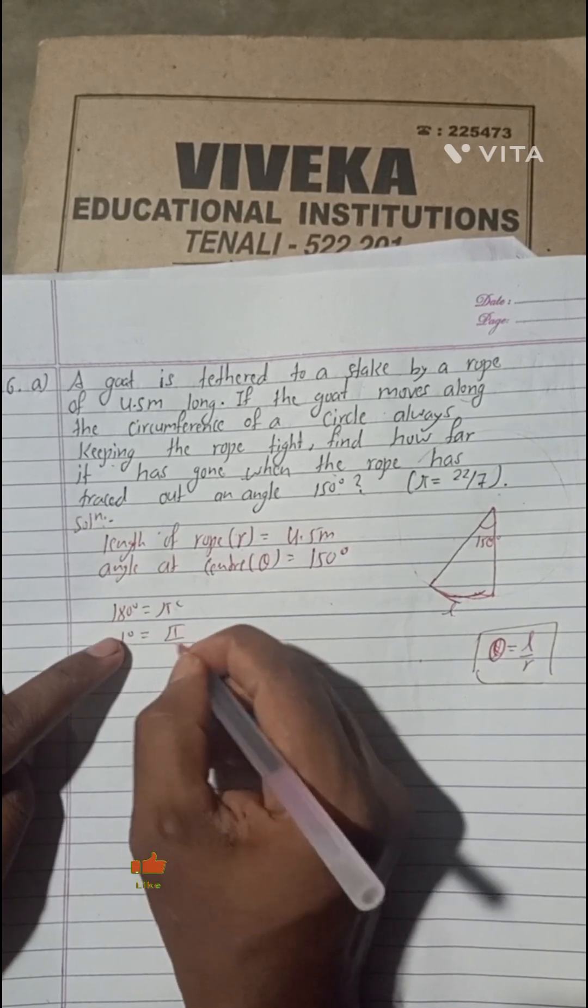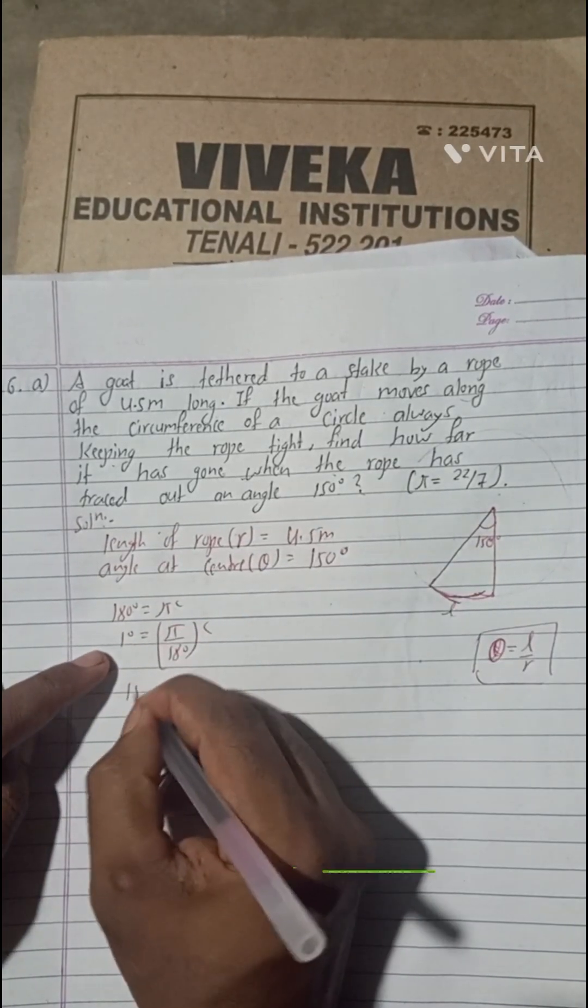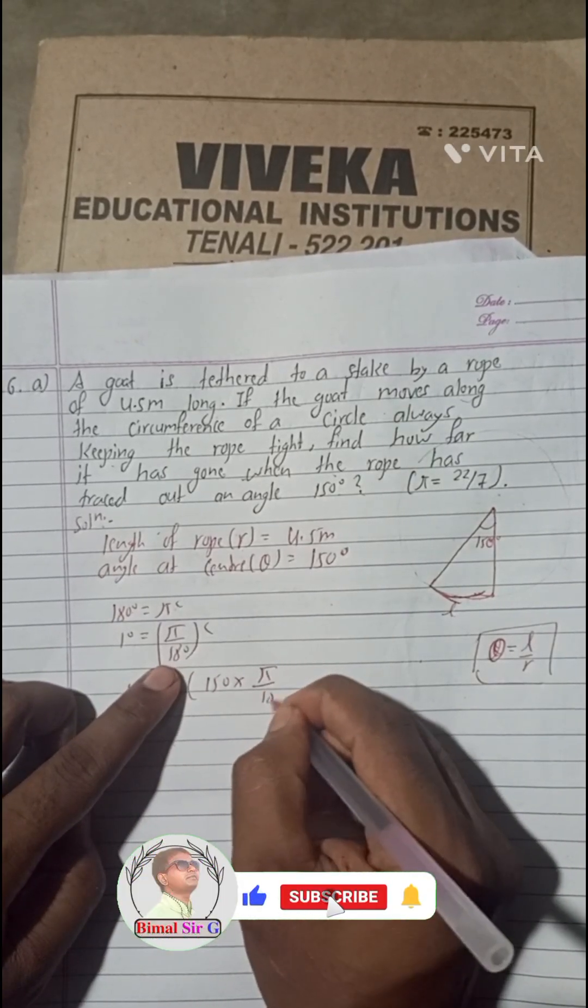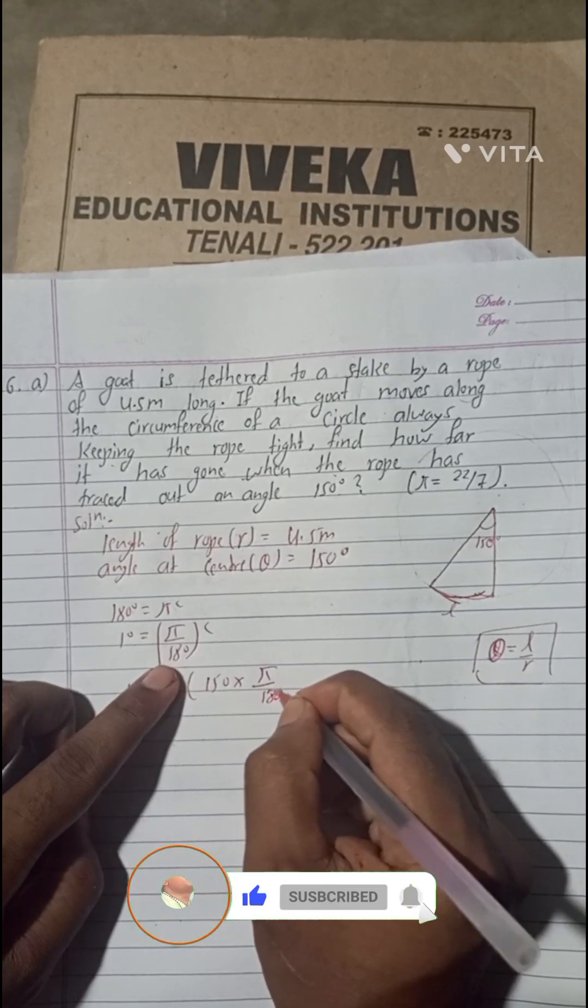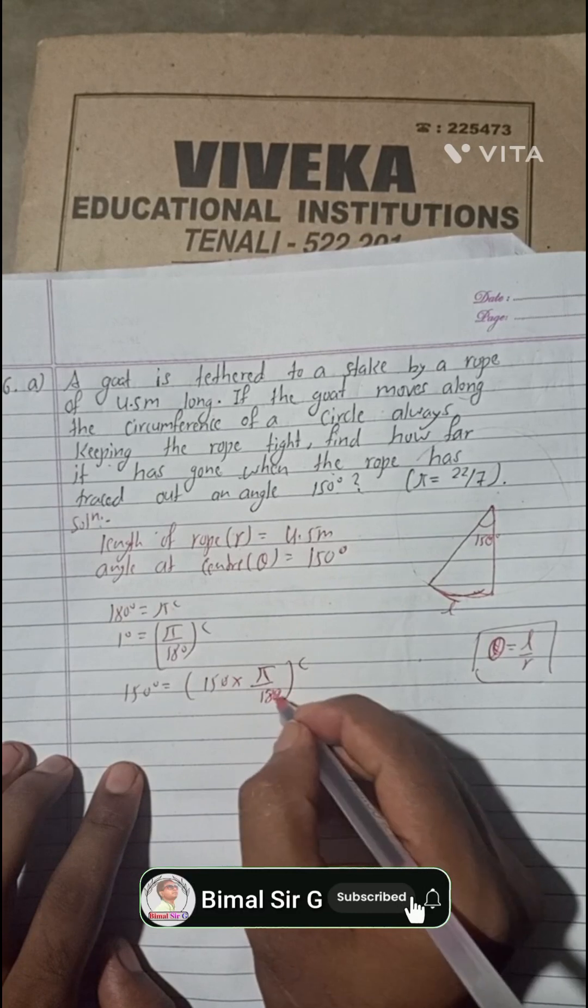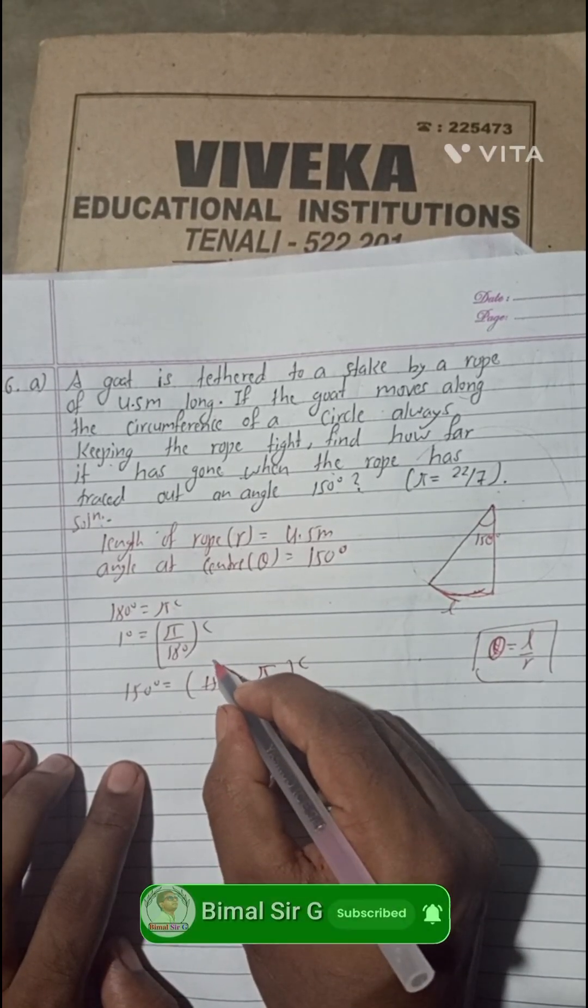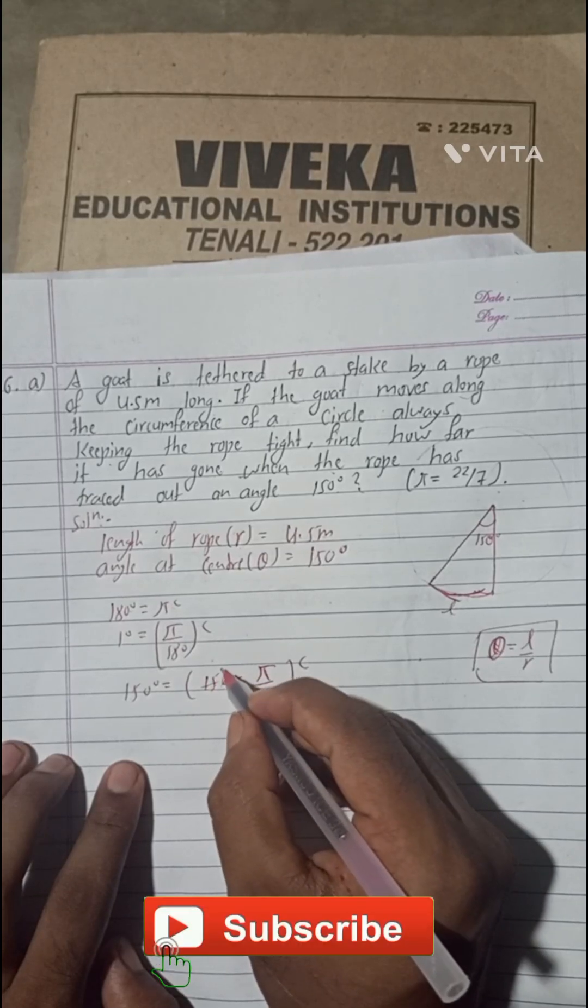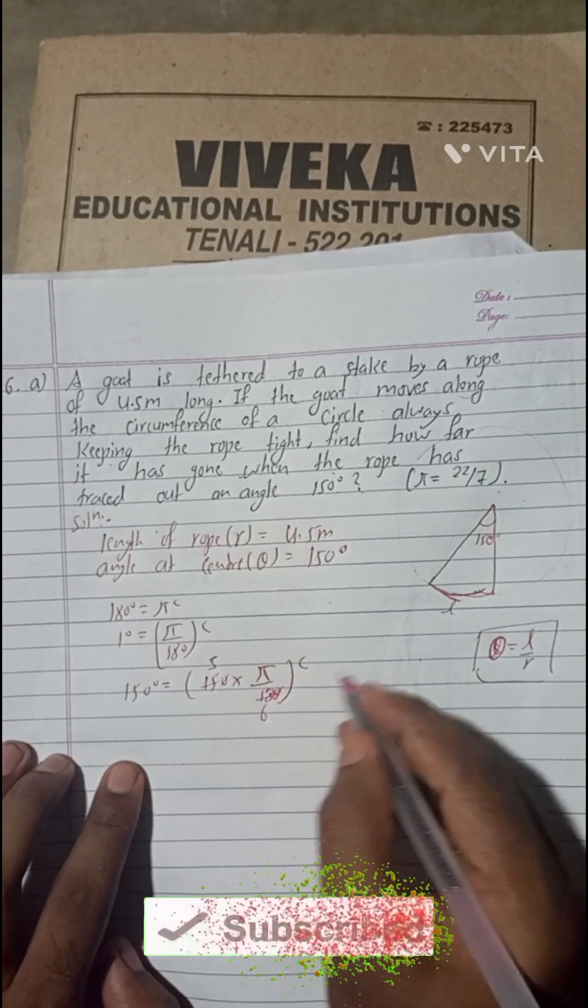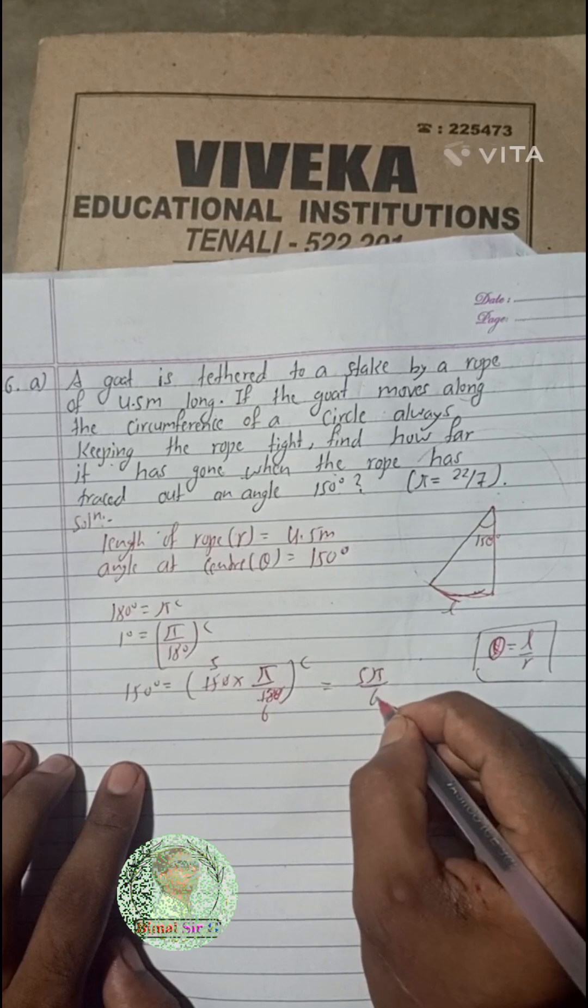We will change 150 degrees into radian. We can write: 180 degrees equals pi radian. One degree equals pi by 180 radian. So 150 degrees equals 150 into pi by 180 radian. If we divide this by 5, we get 30; divide by 3, we get 5 and 6. This is equal to 5 pi by 6 radian.